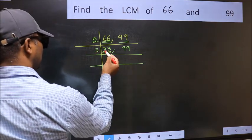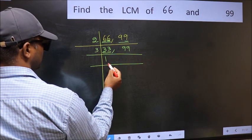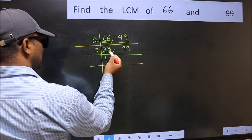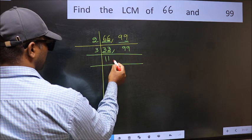First number 3, when do we get 3 in 3 table? 3 ones 3. The other number 3, when do we get 3 in 3 table? 3 ones 3.